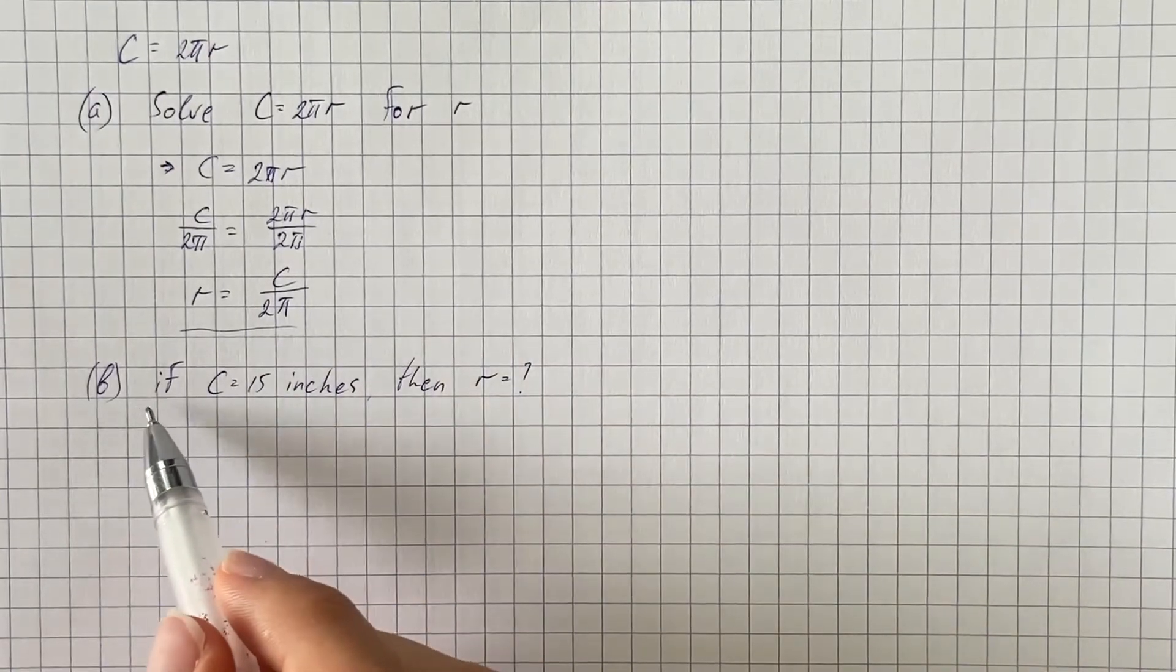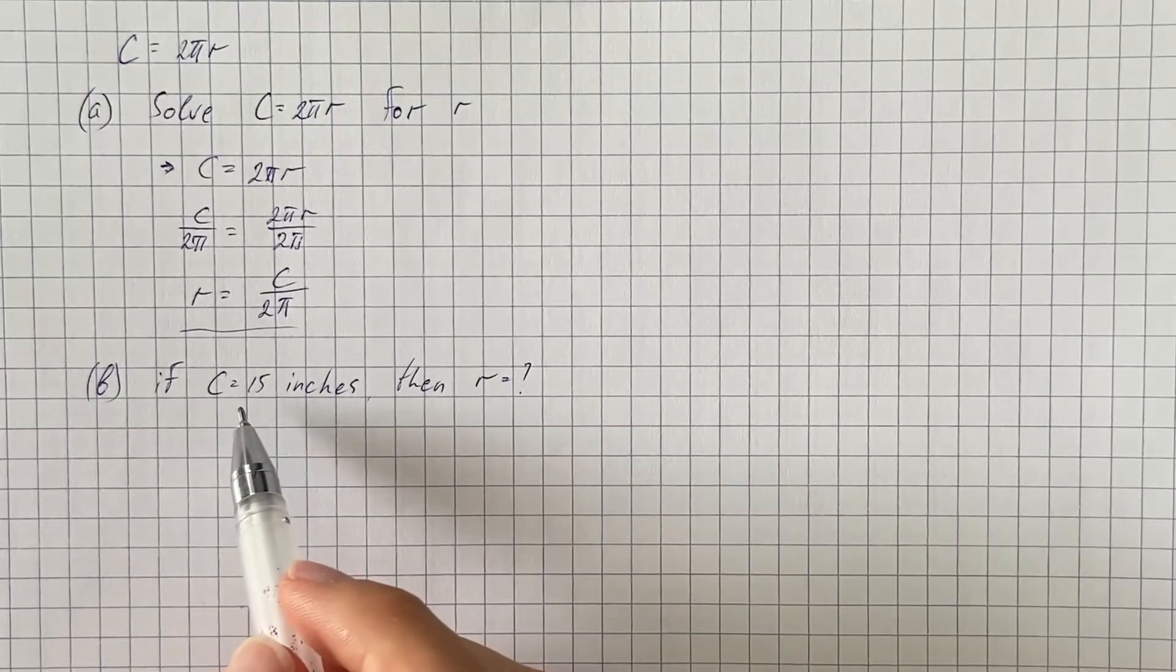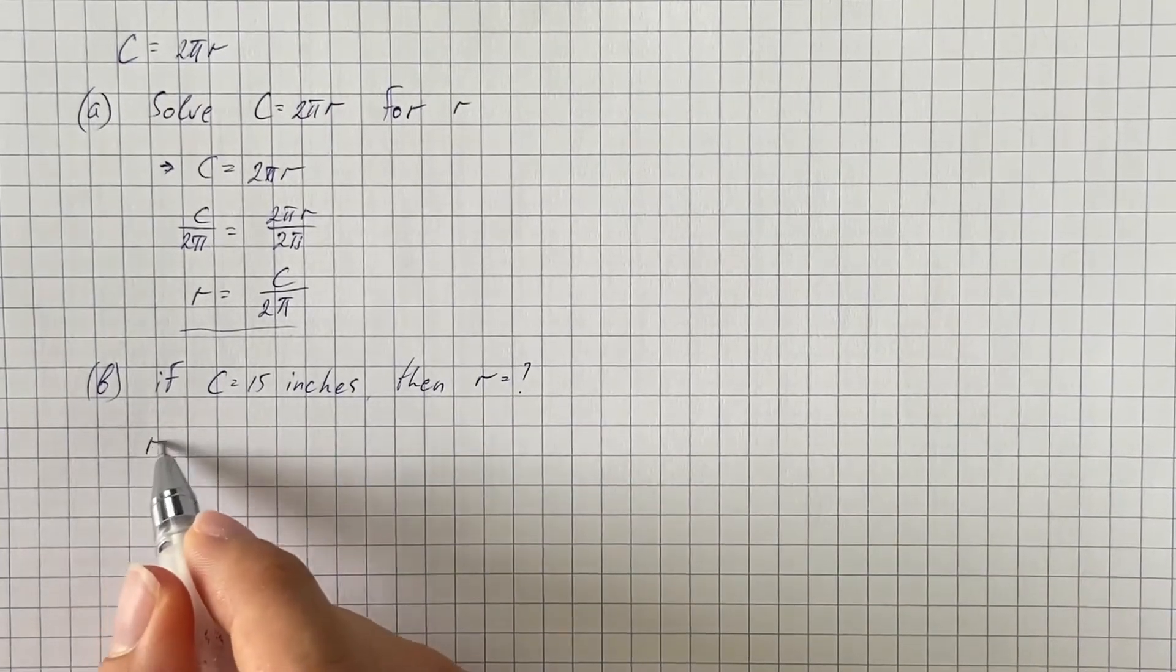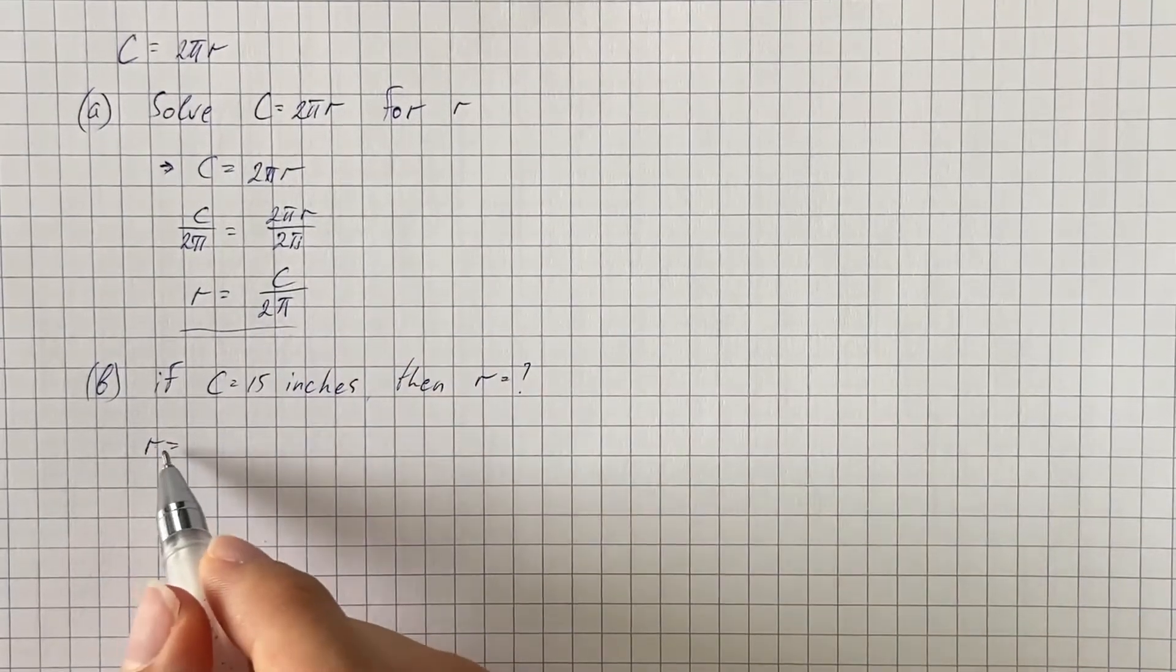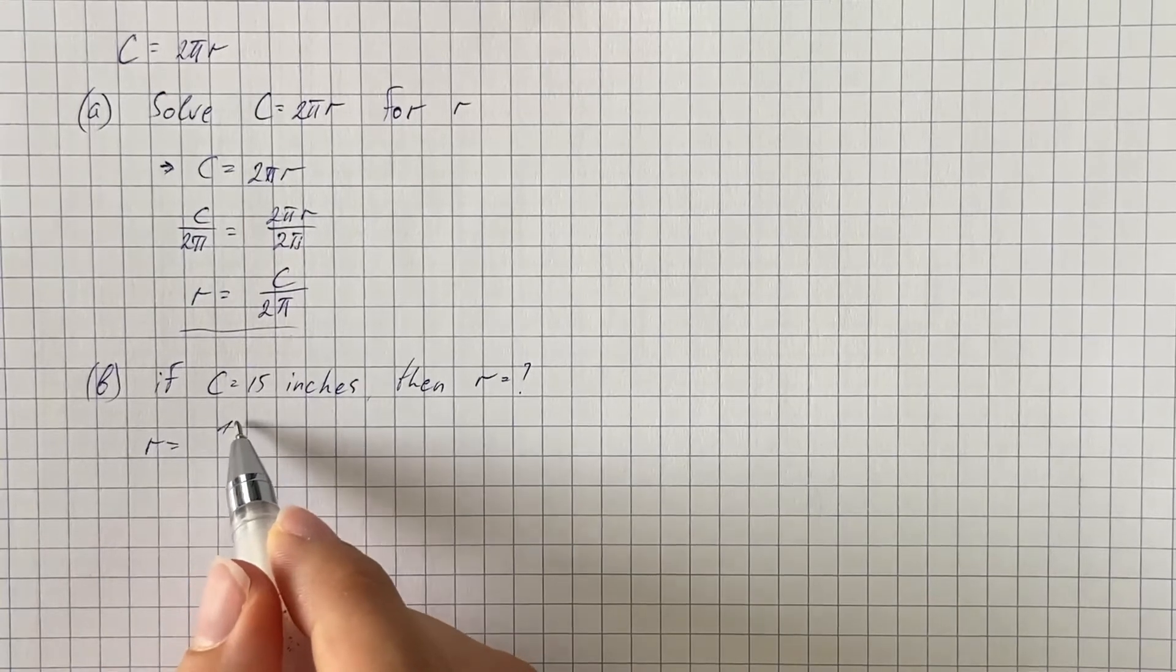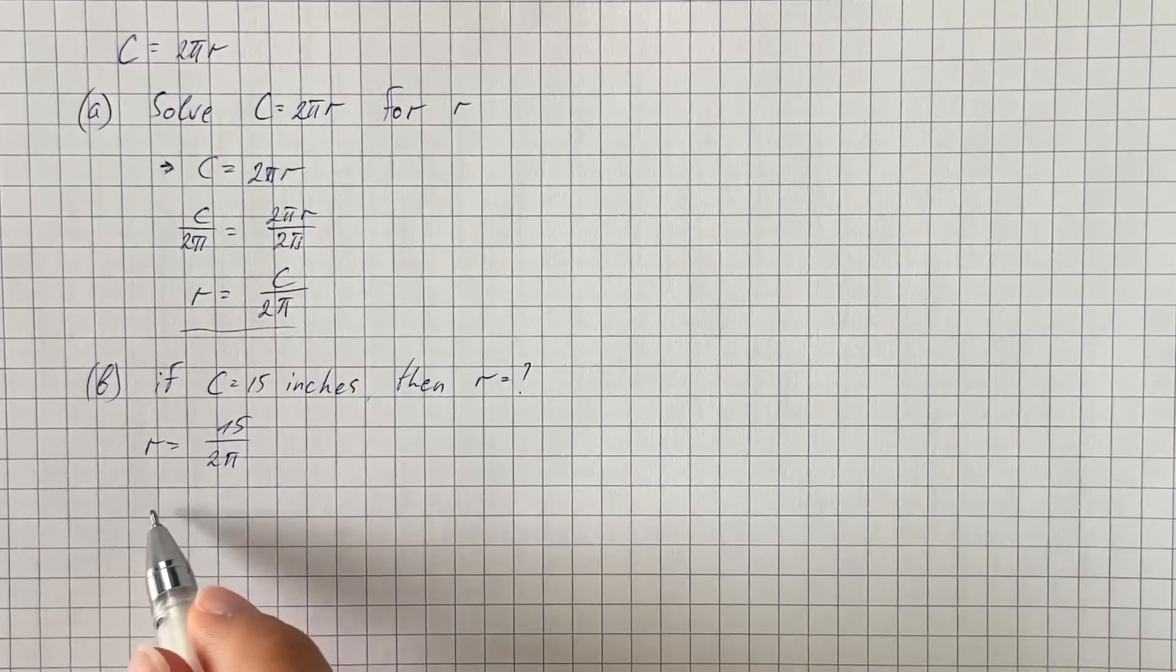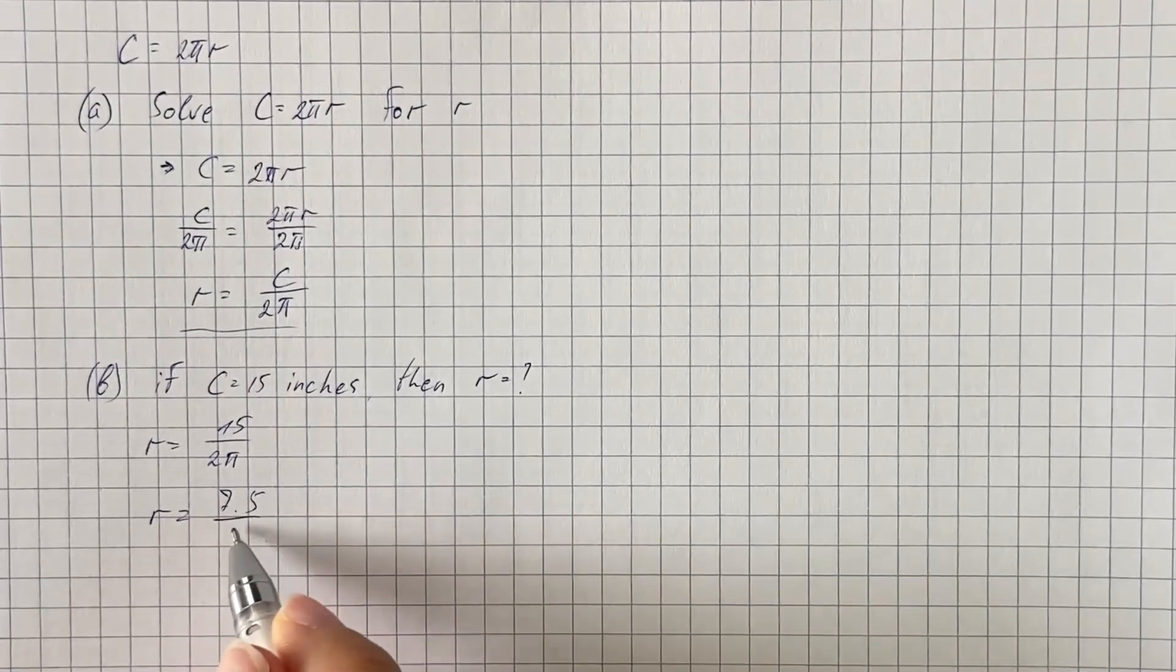And also we have to find radius if circumference is 15 inches, so we're gonna just put c in this formula we get, and that's gonna be 15 over 2 pi, or just r equals 7.5 over pi.